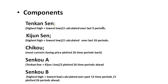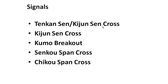Senkou Span B is the highest high and lowest low calculated over the past 52 periods, divided by two, and then plotted 26 periods into the future. The signals are: the Tenkan-sen/Kijun-sen cross (TK cross); the Kijun-sen cross, where price actually passes through Kijun-sen and closes above; the Kumo breakout, where price breaks above the Kumo and closes above. The Senkou Span cross, also called the Kumo twist, signals a change of trend and is used as a confirmation signal. The Chikou Span cross, where Chikou crosses through price, is also used for confirmation.